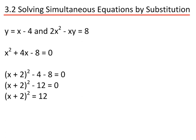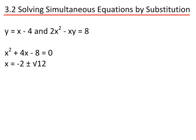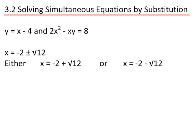We take the square root of both sides, so x plus 2 equals plus or minus the square root of 12 — remembering the plus or minus. Taking 2 from both sides, x equals minus 2 plus or minus the square root of 12. So x has two solutions: either x equals minus 2 plus the square root of 12, or x equals minus 2 minus the square root of 12.